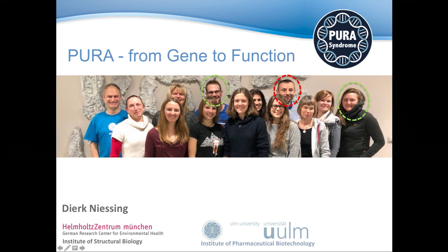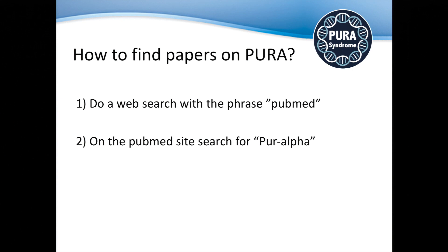Before I start talking about genes and genomes and proteins, I want to fulfill the promise to give you some information about how you can access publications and search them on the internet. The best way is to do a web search with the phrase PubMed, go to the PubMed homepage, which is a US-based site where you can search for research publications, and then put in the keyword PURA Alpha. You could also search just PURA, but there are authors with the same last name, so that would be confusing. Enter PURA Alpha, and you get a list of publications.